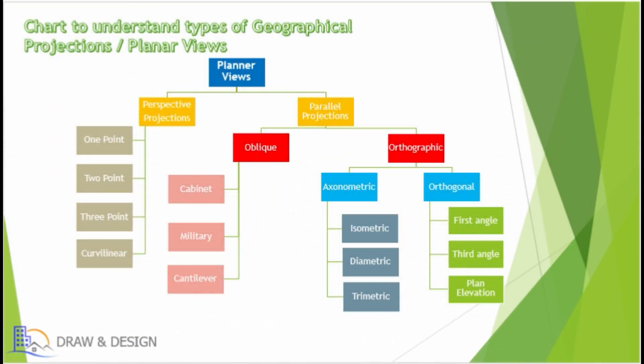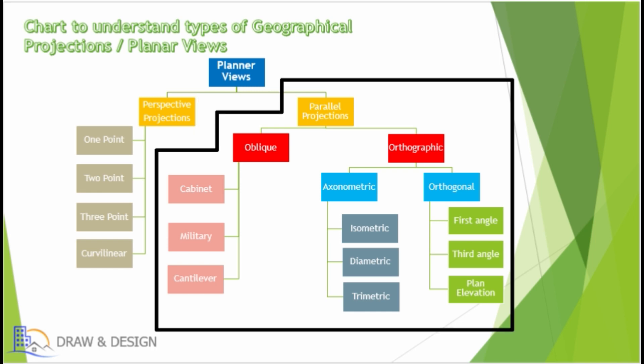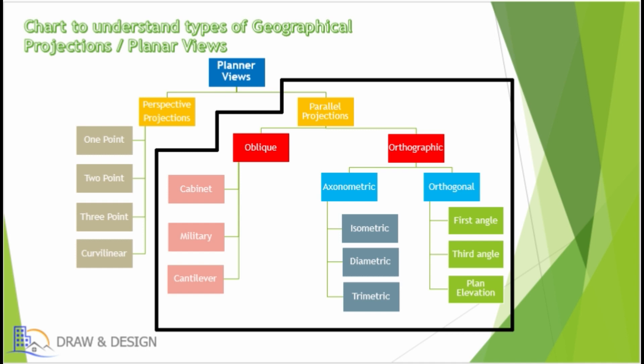This chart is showing us the tree for projection views. Planar projections are subdivided in two types: perspective projections and parallel projections. In today's video we will only discuss perspective projections. Parallel projections will be left undescribed — please stay with us, because in future videos parallel projections will be discussed in detail.